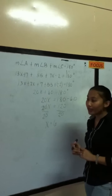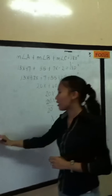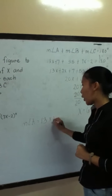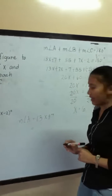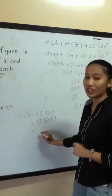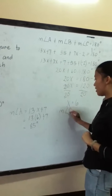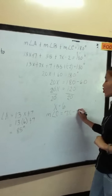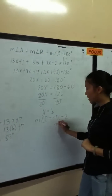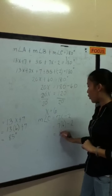Since we already have the value of x, we can now find the exact measure of each angle. For angle A, we have 13x plus 7; substituting x equals 6 gives us 13 times 6 plus 7, which equals 85 degrees. For angle C, we have 7x minus 2; substituting x equals 6 gives us 7 times 6 minus 2, which equals 40 degrees.